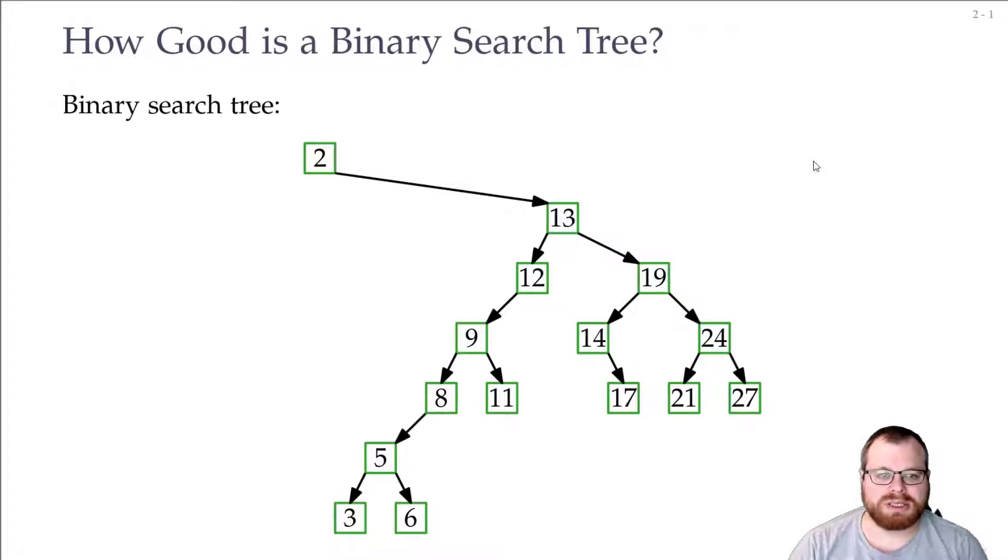So this is a binary search tree. Every vertex has at most two children and if we want to search for something, for example for the number three, then we start in the root and check three is larger than two, so I go to the right. It's smaller than 13, so I go to the left and so on until I reach my number.